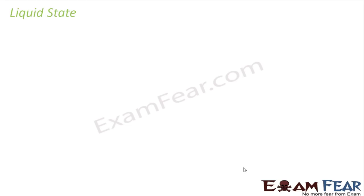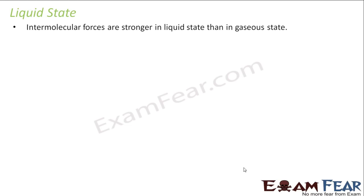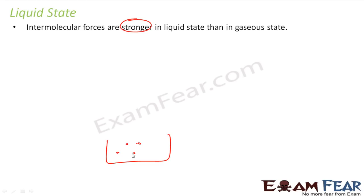So we talk about gaseous state, we talk about fluid — fluid is nothing but the continuity between the liquid state and gas state. So let's learn more about liquid state. In the liquid state, the intermolecular force is stronger. If I have my liquid here, the intermolecular force is stronger, and that's why they have a definite volume. But they don't have a definite shape because the force is not as strong as in the case of solids.